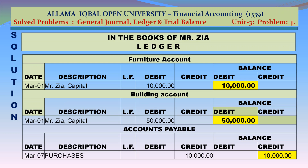Furniture account: debit — Mr. Jia capital March 1 Rs 10,000. Closing balance: Rs 10,000 debit. Buildings account: debit — Mr. Jia capital March 1 Rs 50,000. Closing balance: Rs 50,000 debit. Accounts payable: credit — purchases March 7 Rs 10,000. Closing balance: credit Rs 10,000.